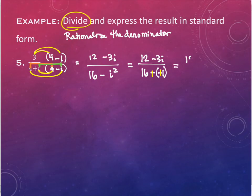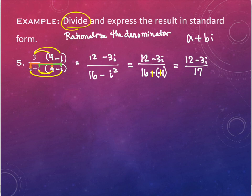One way of writing this — and I'm okay if you do this in your written work — is to write it like 12 minus 3i over 17. But I want you to recognize this is not in standard form. Standard form looks like a plus bi, and right now the a and the b are sort of joined together with a common denominator.